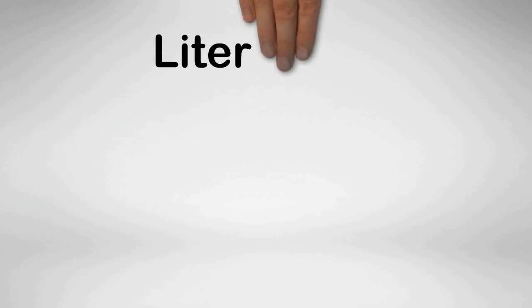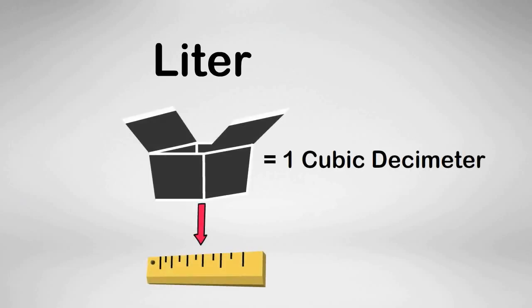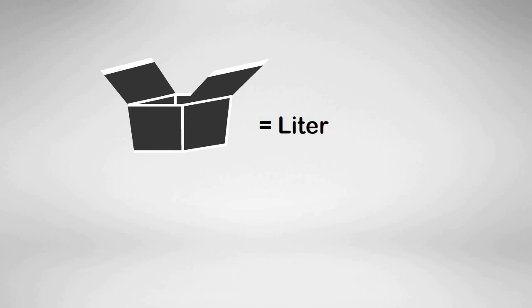A liter is the volume of 1 cubic decimeter, so you can see how the three base units are related. A liter is the volume of 1 decimeter. Again, you can subdivide the liter into a centiliter which is one tenth of a liter.